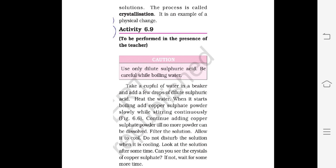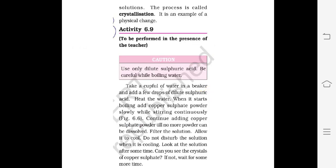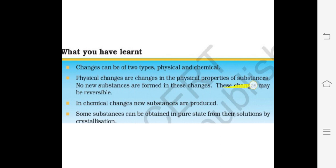What we have learnt in this chapter: Changes can be of two types — physical and chemical. Physical changes are changes in the physical properties of a substance such as size, shape, color, etc. No new substance is formed and these changes are reversible. In chemical changes, new substances are produced. Some substances can be obtained in pure state from their solution by crystallization. That completes Chapter 6.